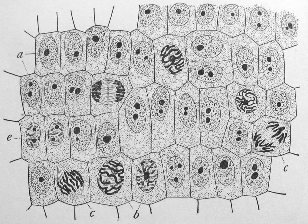Plants, animals, fungi, slime molds, protozoa, and algae are all eukaryotic. These cells are about 15 times wider than a typical prokaryote and can be as much as a thousand times greater in volume. The main distinguishing feature of eukaryotes as compared to prokaryotes is compartmentalization, the presence of membrane-bound organelles in which specific activities take place.